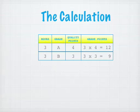In a course of three credit hours with a grade of B, which has three quality points, we multiply three by three, giving us nine grade points.